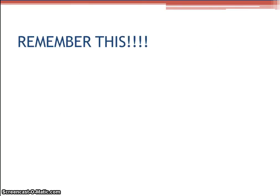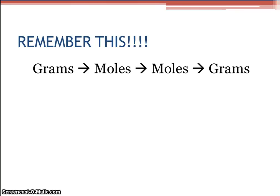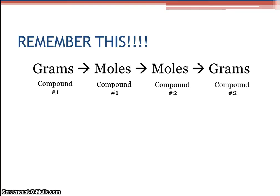Remember this when we're doing stoichiometry problems: we want to go from grams to moles to moles to grams every time. We're always going from grams of compound 1, to moles of compound 1, to moles of compound 2, to grams of compound 2. If you always write this down to start with, you'll be in great shape. If you always remember going from grams to moles to moles to grams, you'll do amazing.